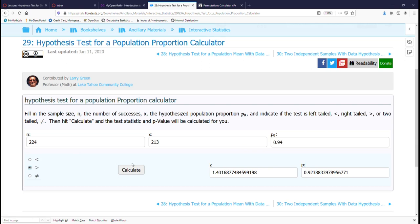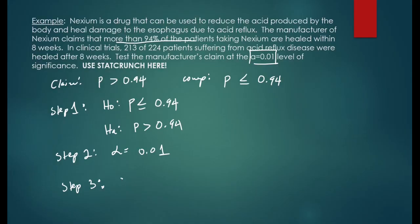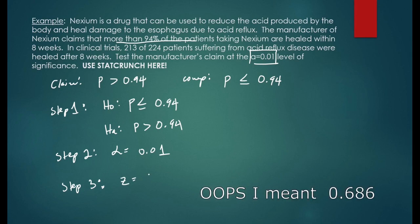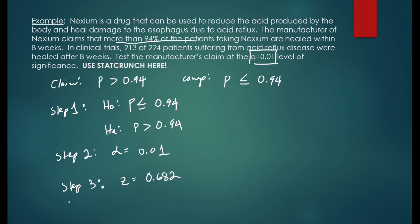I know my alternative hypothesis is greater. Click greater for the inequality and calculate. Here's our z statistic, about 0.69, and our p-value is about 0.246. Also from StatCrunch, we have the p-value in step 4 is equal to 0.2462.